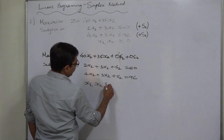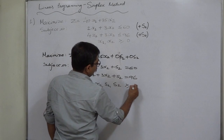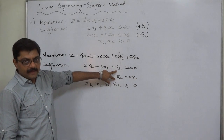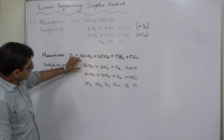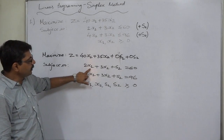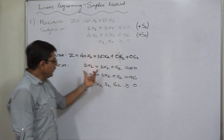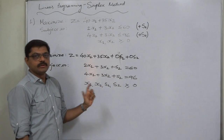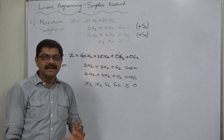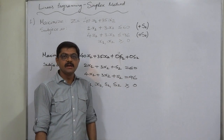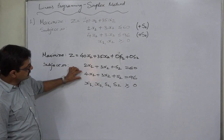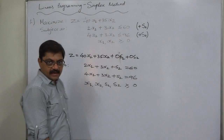x1, x2, s1, and s2 are all non-negative. The slack variables represent unused capacity or unused resources. For example, if this constraint relates to material usage and we have 60 units available — with consumption of 2 units per x1 and 3 units per x2 — if we manufacture 0 units of both x1 and x2, then s1 equals 60, meaning all 60 units of material are unused.